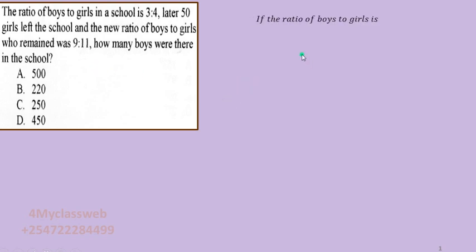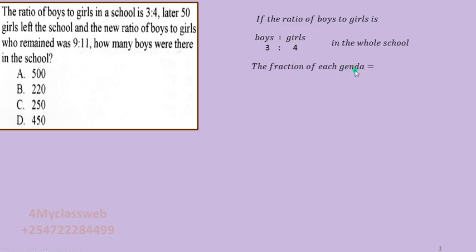If the ratio of boys to girls is 3:4, then for every three boys you have four girls. This group has seven students in total. We can now get the fraction for each gender. The fraction for boys is three over seven. The fraction for girls is four over seven.